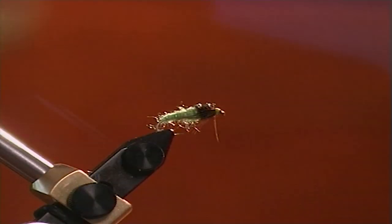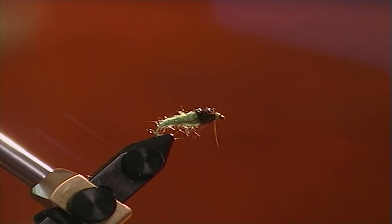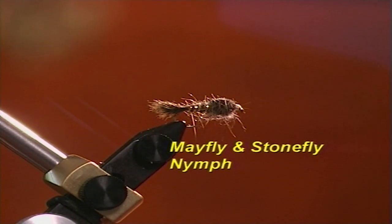The caddis larva and the midge larva have no tails — they are grub-like creatures with a green, brownish, or reddish body and a darker head. A mayfly or stonefly nymph will have tails, a body, and some form of wing case where their adult wings are forming underneath.